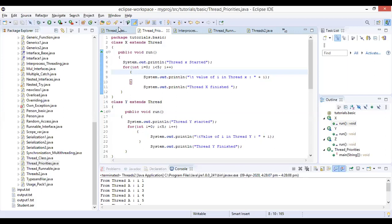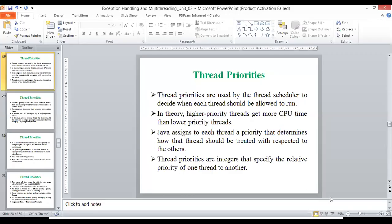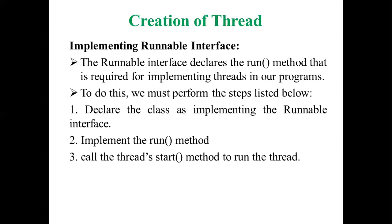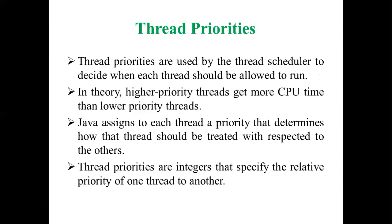Let me explain some fundamental aspects related to thread priority, and then we'll implement the same with the Eclipse editor. Thread priorities are used by the thread scheduler to decide when each thread should be allowed to run. There is a concept of scheduling the thread — scheduling is nothing but the allocation of timing to each and every thread.